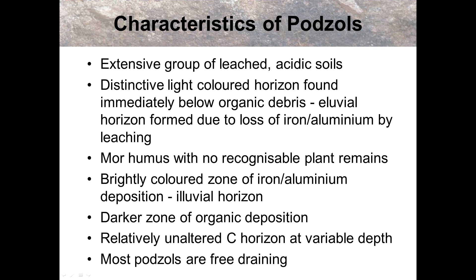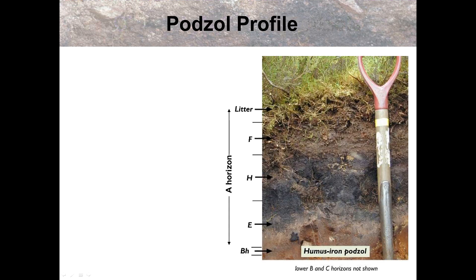Most podzols are free draining, so there's a lack of waterlogging, unless we want to discuss the iron pan later on. So there's a profile — you can see you've got your ash grey colour where the nutrients have left, linking towards the bottom with a more orange colour, your iron pan, where the iron nutrients have been leached out. Leaching happens because precipitation exceeds evaporation — there's more rainfall than evaporation in these areas. That tends to happen in places like the Cairngorms, where you're getting a lot of snowmelt and heavy rainfall. We can link it into what we know about glaciated areas.